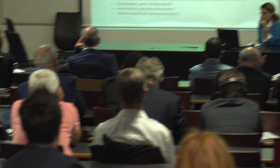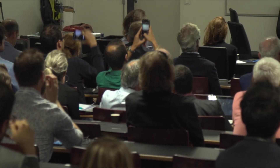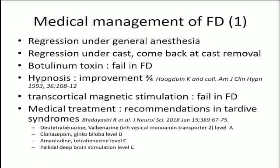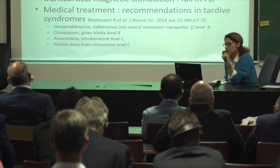Regarding medical management, all papers report regression under general anesthesia. There is regression under casting, but deformity returns immediately after cast removal. Botulinum toxin does not work in functional dystonia. There is a paper on hypnosis with improvement in three out of four patients. Transcortical magnetic stimulation, proposed as a medical treatment for dystonia, fails in functional dystonia. There is one recent paper on drugs with recommendations for tardive dyskinesia syndrome at evidence levels A to C, but with inconsistent results.